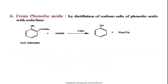The next method is from phenolic acid. We take sodium salicylate, which on distillation with soda lime results in phenol. Soda lime is a mixture of NaOH and CaO. When sodium salicylate reacts with NaOH in the presence of calcium oxide, we obtain phenol and sodium carbonate as a side product.